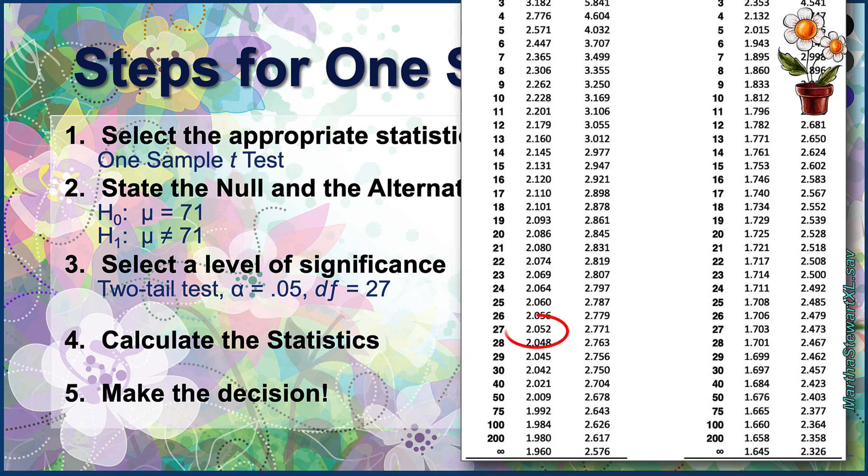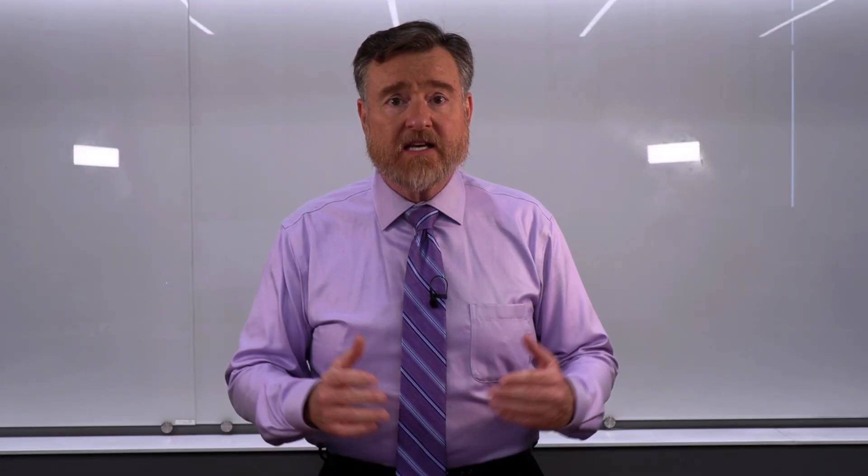In the first column, we find that for 27 degrees of freedom, alpha 0.05, two-tailed test, our critical value is ±2.052. If we calculate a t-value in excess of this critical value, we have established statistically significant differences between the means.